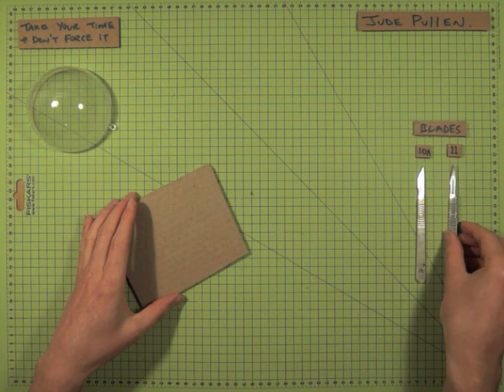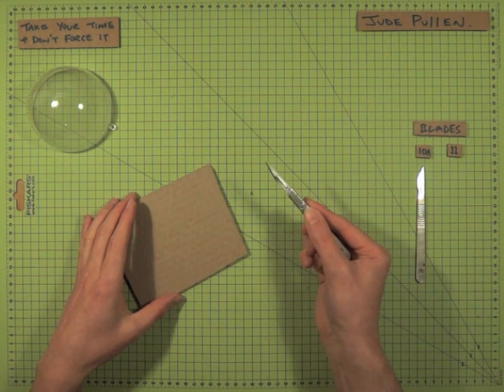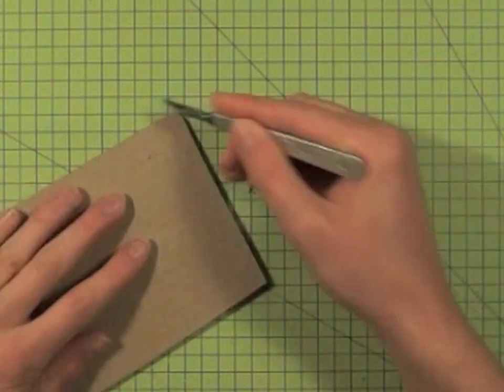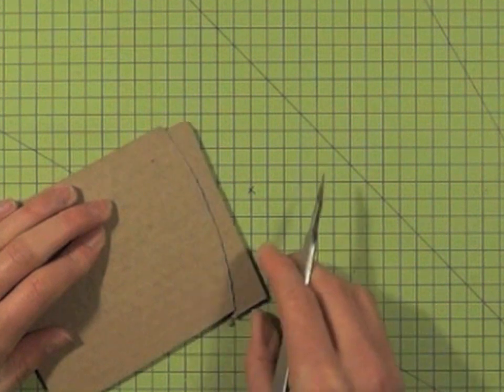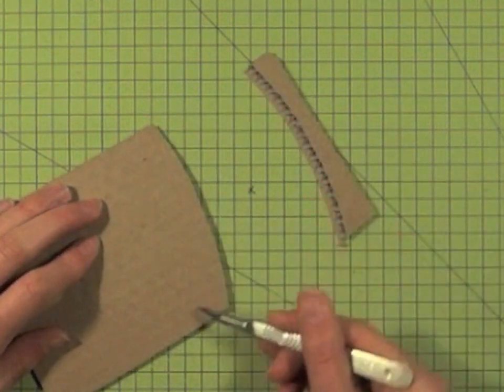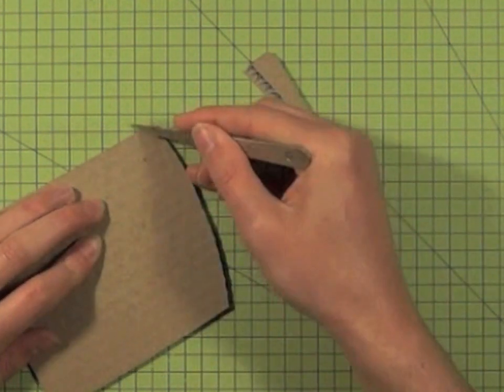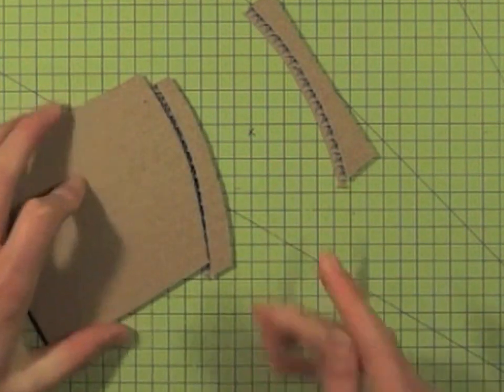However, the 11 is actually a bit thinner, you'll notice, and that means it's a little bit more bendy. Although it's really good for doing some very cute angles, I'm keeping my fingers well out of the way so that if I did slip I wouldn't go into myself.